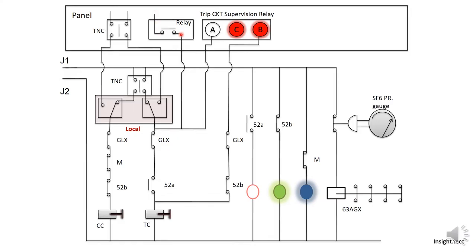If the breaker has a trip, then the breaker will trip — this is the local condition. If we switch to the panel and the breaker is in remote condition, we will give a TNC command to the panel. In remote condition, the TNC switch will operate from the panel.